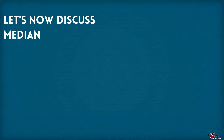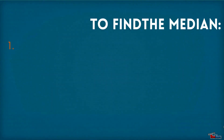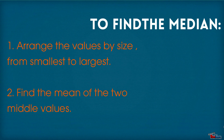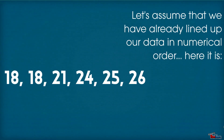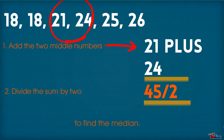Let's now discuss median. The median is the middle value in a set of data. To find the median, arrange the values by size from smallest to largest and then find the mean of the two middle values. Let's assume that we have already lined up our data in numerical order. We first find the two middle values, then add the two middle numbers together, and divide by 2 to find the median.